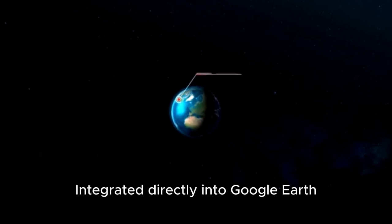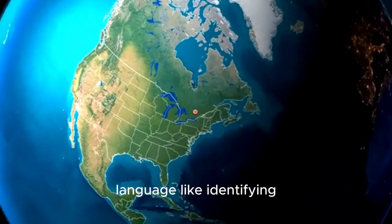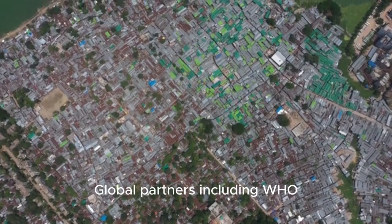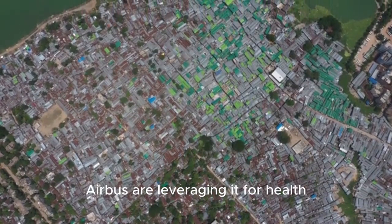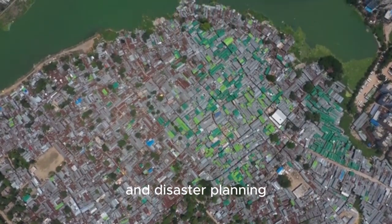Integrated directly into Google Earth, users can now query risks in natural language, like identifying drought-prone rivers or vulnerable neighborhoods. Global partners including WHO, Planet, and Airbus are leveraging it for health forecasting, deforestation tracking, and disaster planning.